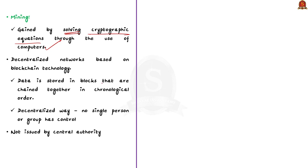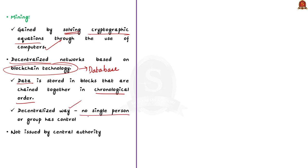Many cryptocurrencies are decentralized networks based on blockchain technology. Blockchain technology is a specific type of database in which data is stored in blocks that are chained together in chronological order — this is why it is called blockchain. Blockchain technology uses a decentralized approach so that no single person or group has control over it; all users collectively retain control. Cryptocurrencies make use of this blockchain technology.